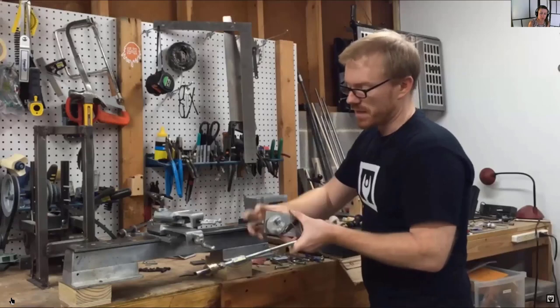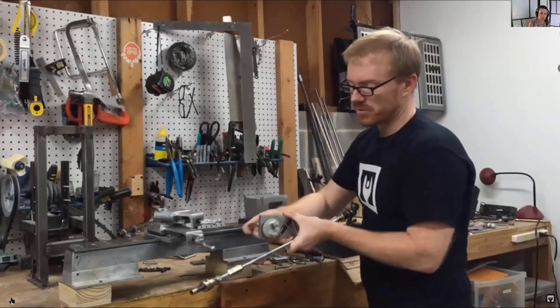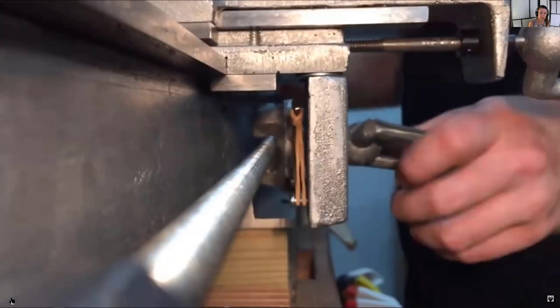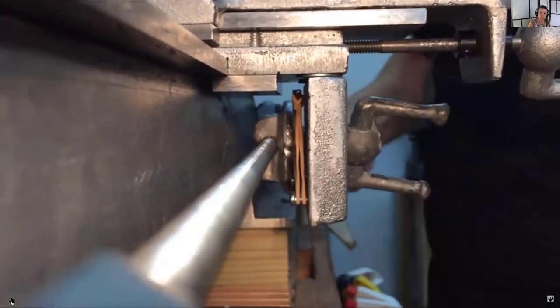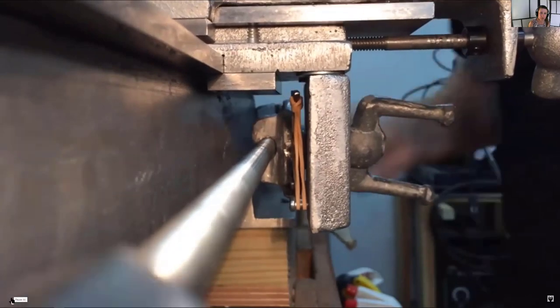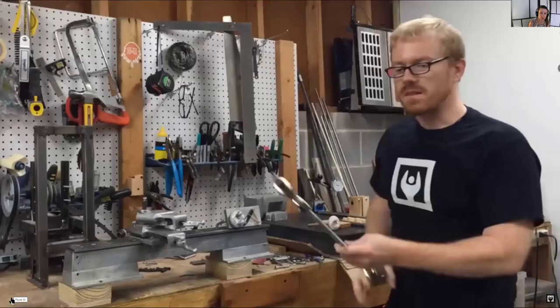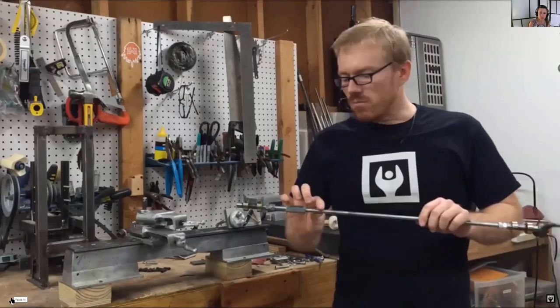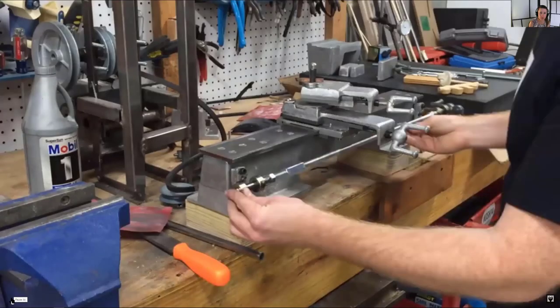On it is mounted the split nut. The split nut allows the operator to engage or disengage the lead screw so that you can move the carriage along the bed by hand. The lead screw has journals on either end so it's a threaded rod mounted in bearings.